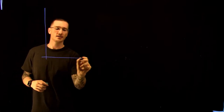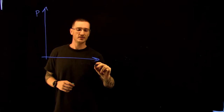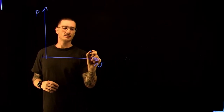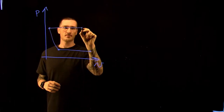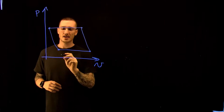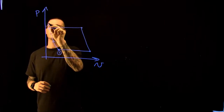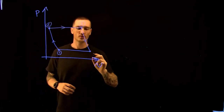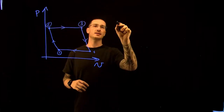First, we're going to draw out what the Brayton cycle looks like on our PV diagram. Starting at point 1, we're compressing to point 2, adding heat to point 3, and then going through a turbine to point 4.